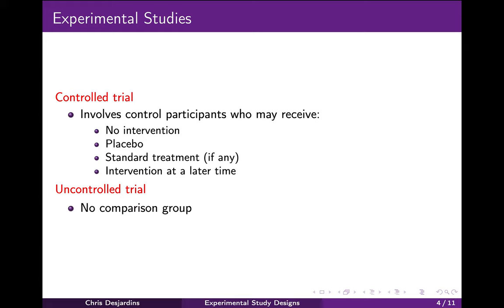Experimental studies can be designed with or without a comparison group. A controlled trial involves an internal comparison or control group. The control group consists of participants who do not receive the intervention or treatment of interest. Instead, they may receive no treatment at all, a placebo, the current standard of care treatment, or the same treatment but delayed. The presence of a control group that is similar in every other way to the treatment group, except that it did not receive the treatment, allows investigators to attribute any group differences in outcomes to the treatment itself.